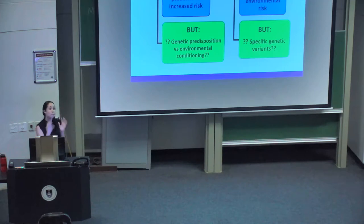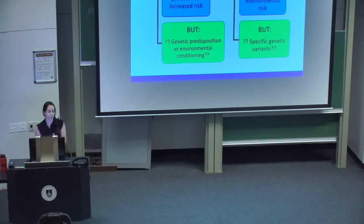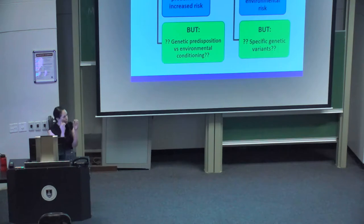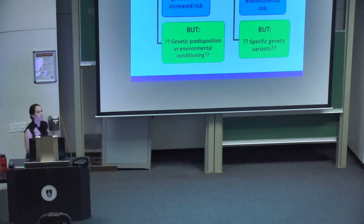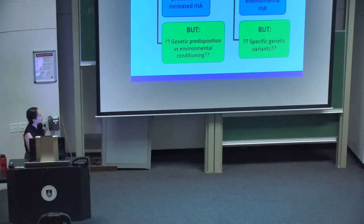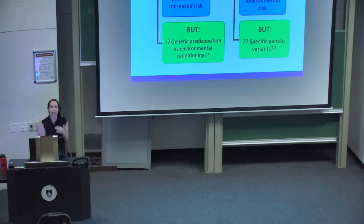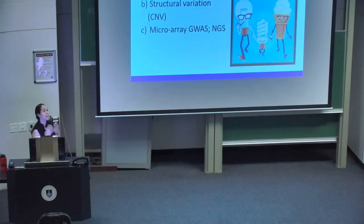Twin studies addressed this major limitation. They compare heritability between monozygotic (identical) and dizygotic (non-identical) twins, or take monozygotic twins who have been separately adopted. Since monozygotic twins share almost 100% of their genome, if they're raised in different environments and show differences in heritability, that difference is most likely caused by environmental factors. However, twin studies couldn't identify specific genetic variants or genes that confer increased risk — and that's where the molecular genetic era began.